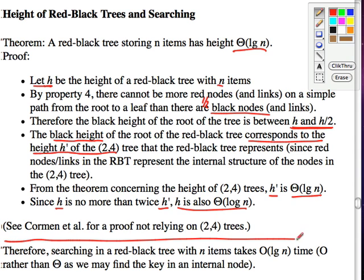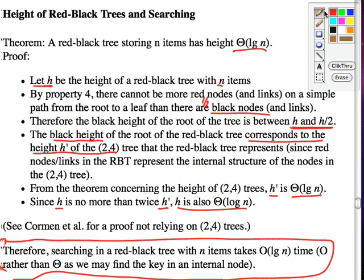Just like for 2-4 trees, red-black trees have inherited the property of Θ(log n) height. So searching in a red-black tree takes O(log n) — it's not theta because we may find a key in an internal node early. Insertion and deletion are also log n, but that will be the topic of the next screencast. Given the height is log n, we expect log n behavior there as well.